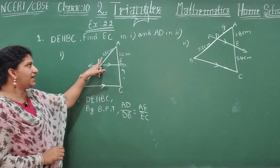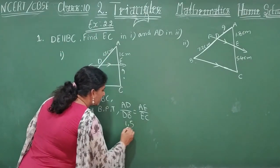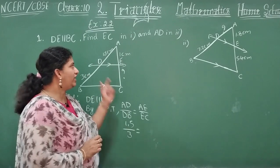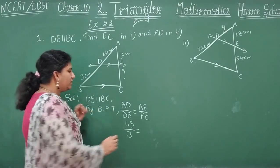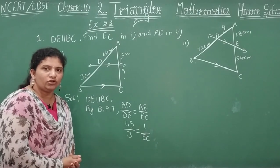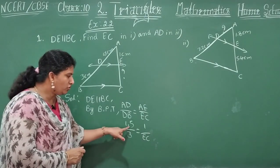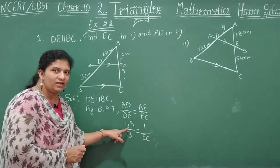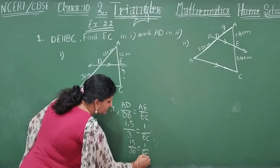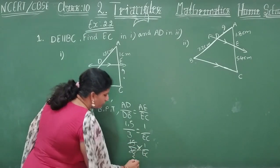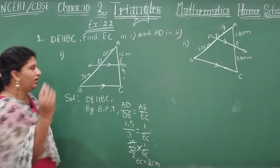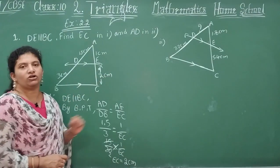Now, look here. What is AD? 1.5. What is DB? 3. What is AE? 1 cm. EC we need to calculate. To remove the decimal, put a zero in the denominator — that is 15 by 30 is equal to 1 by EC. Cross multiply: EC is equal to 2. Therefore, EC is equal to 2 cm.